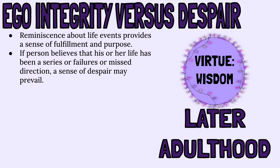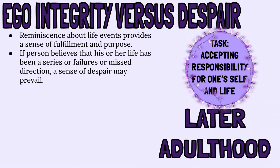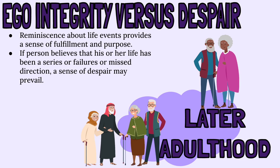In the last stage of Erikson's developmental theory is ego integrity versus despair in the older adult. Their virtue is wisdom, and their task is to accept responsibility for oneself and life. This final stage is usually a period of reflection. Older adults like to look back on their lives and be proud of the contributions they made to society. If the older adult believes that he or she had a series of failures or misdirection, they may feel despair instead of integrity. Also, some older adults may not be fearful of dying if they feel as if they achieved integrity during this stage of life.